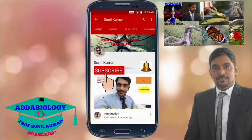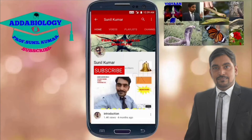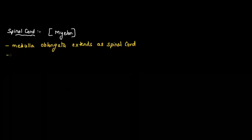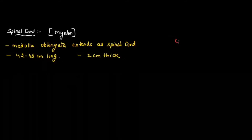We are going to talk about the spinal cord. The spinal cord is also known as myelon — it is the extension of the medulla oblongata of the brain. Whenever we talk about the length of the spinal cord, it is 42 to 45 centimeters long. The thickness of the spinal cord is 2 centimeters.